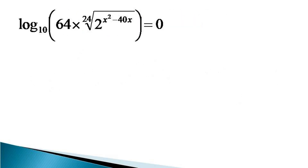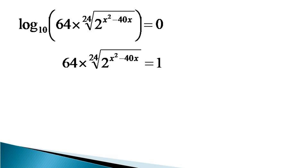To solve this equation, we first notice that the complete expression is equal to 0, and it can be so only when the expression inside the brackets is equal to unity, irrespective of the base of the log. This observation makes 64 into the 24th root of 2 raised to the power x squared minus 40x equal to 1.